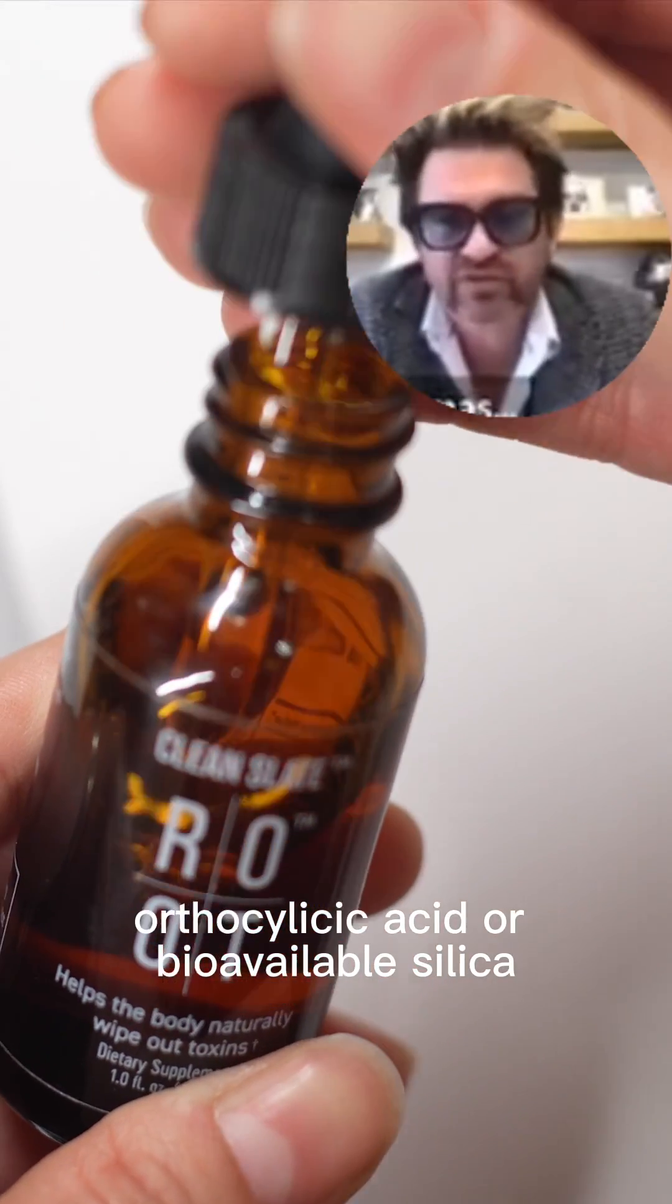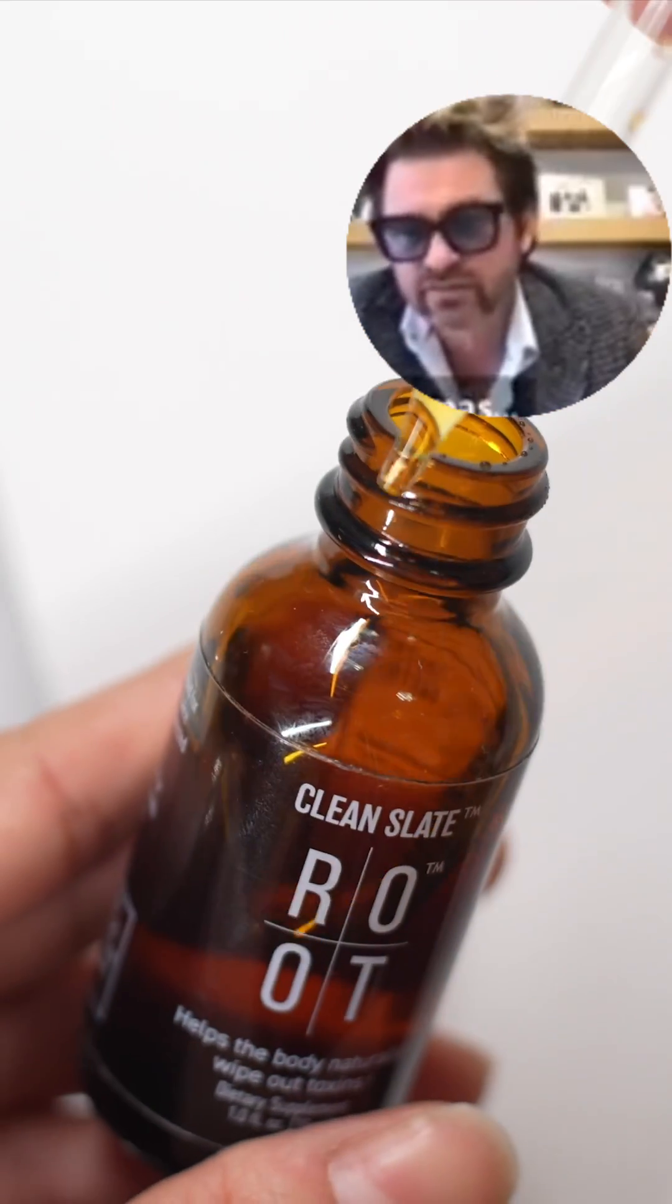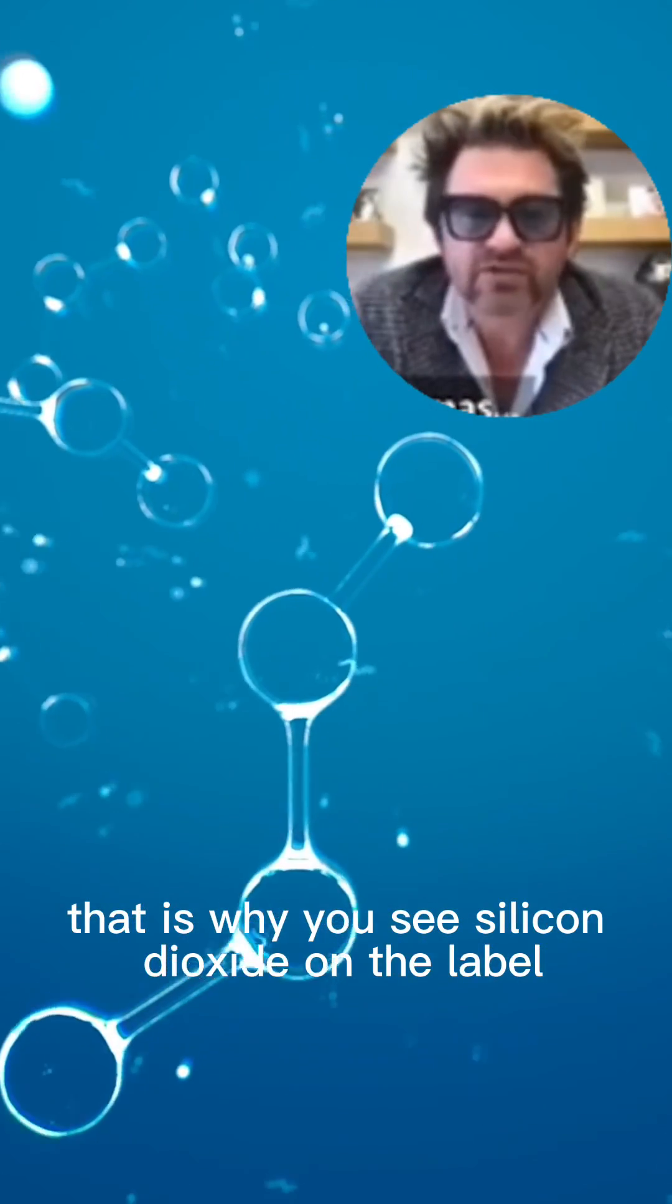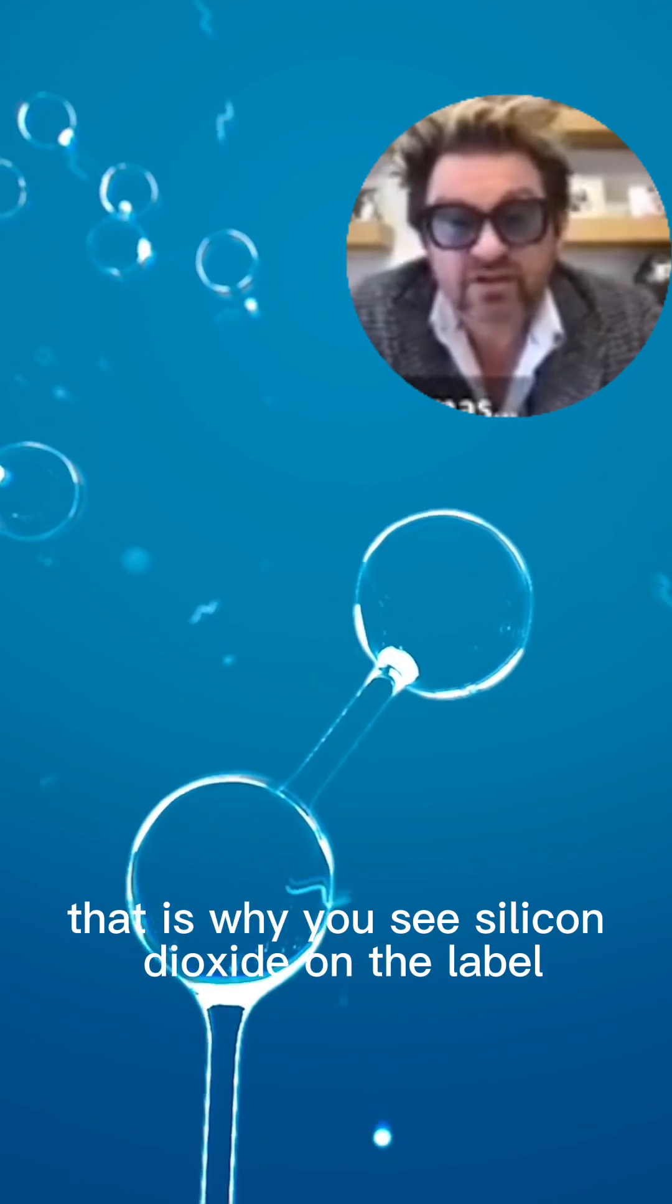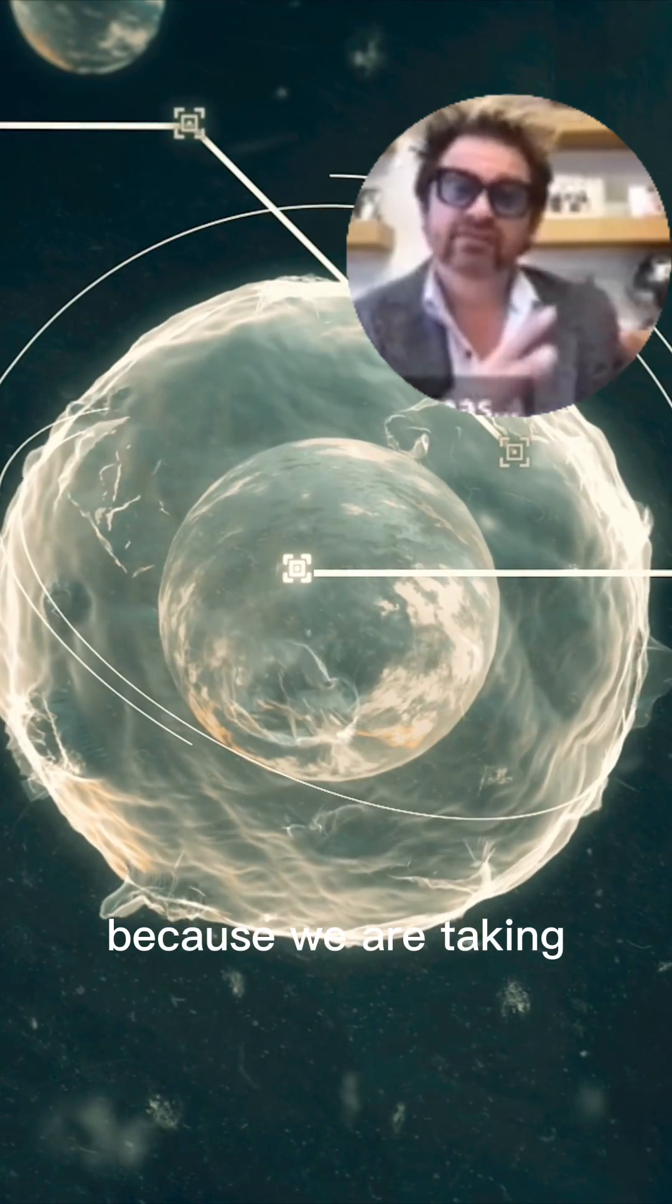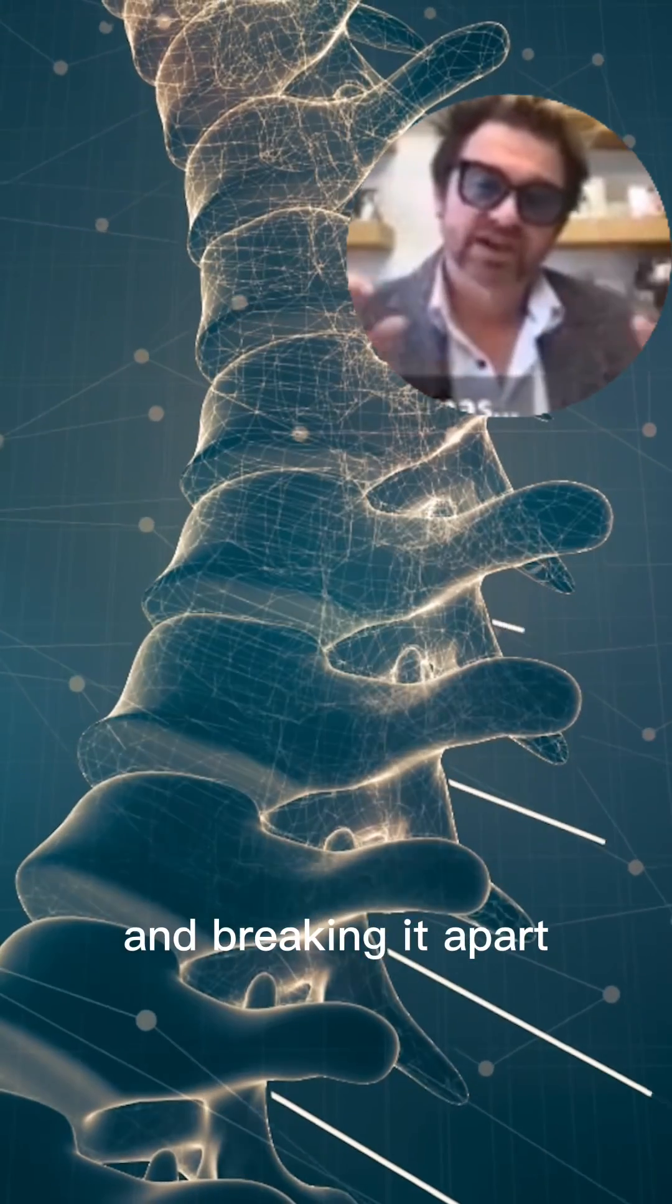Orthosilicic acid, or bioavailable silica, is actually explained as silicon dioxide. That is why you see silicon dioxide on the label for Clean Slate, because we are taking the cage structure of clinoptilolite and breaking it apart.